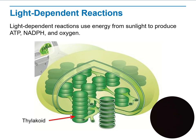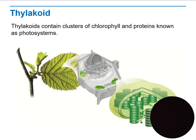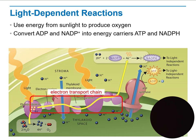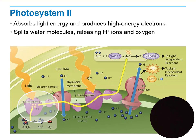The thylakoid has a CD-like structure where the reaction takes place. It contains clusters of chlorophyll and proteins known as photosystems, which are responsible for photosynthesis in the plant. In the light-dependent reaction, energy from sunlight is used to produce oxygen. ADP (adenine diphosphate) and NADP+ are converted into the energy carriers ATP (adenine triphosphate) and NADPH, with the addition of a hydrogen atom to NADP+ to form NADPH.